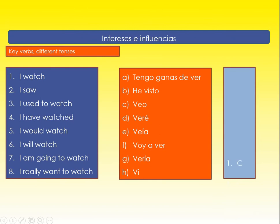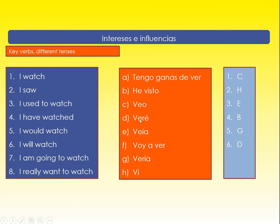So: one - C - 'veo', I watch. Two - H - I saw. Three - B - 'veía', I used to watch. Four - E - 'he visto', I have watched - a tense we'll learn later on. Five - 'vería', I would watch, like 'me gustaría'. Six - D - in the future, still got the infinitive. Seven - F - 'voy a ver', I am going to watch. And finally, 'tengo ganas de ver' - I really want to watch. You might use some of these in today's lesson.